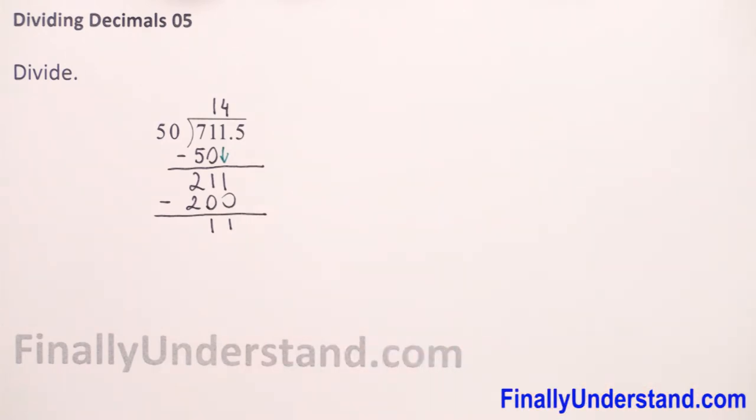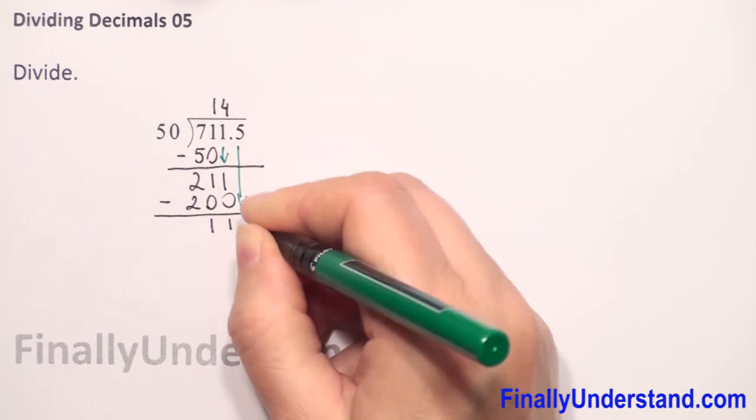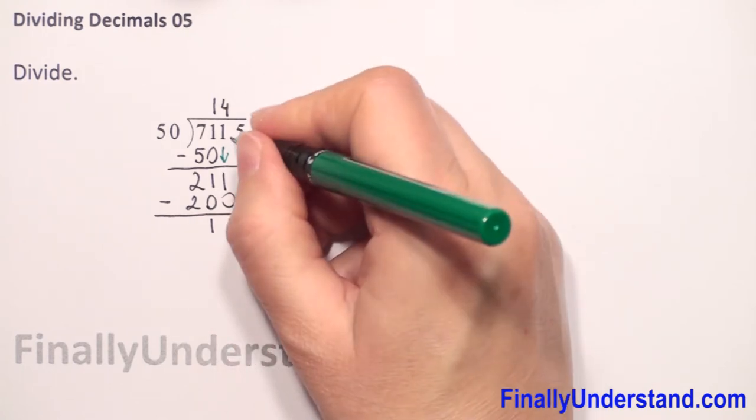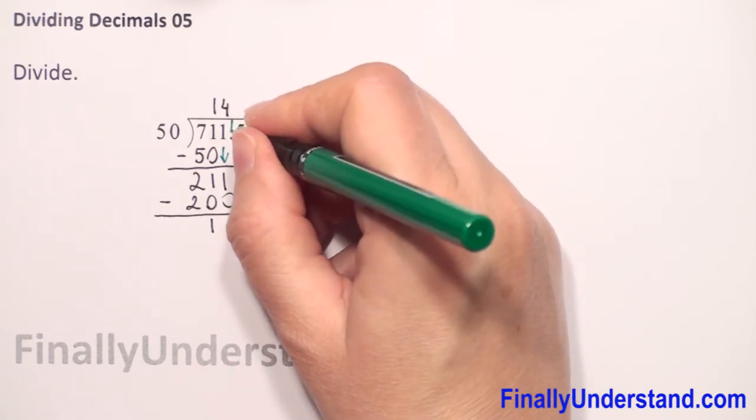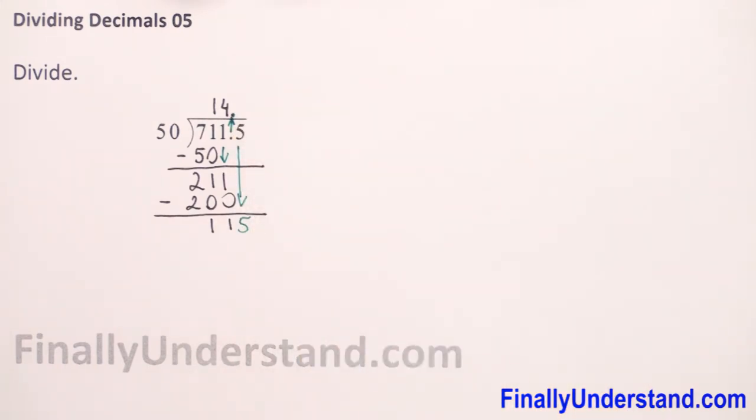What next? We have to take down the next digit, 5. We take it down. And what else? Decimal point. We have to keep it in the same column in our solution. So after 4, we have a decimal point.